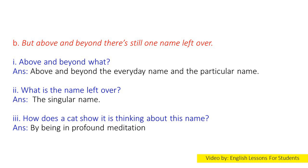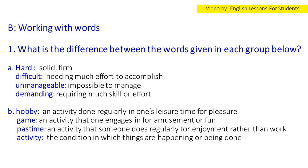2. What is the name left over? Answer: The singular name. 3. How does a cat show it is thinking about this name? Answer: By being in profound meditation.